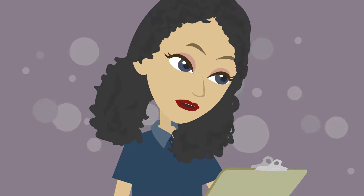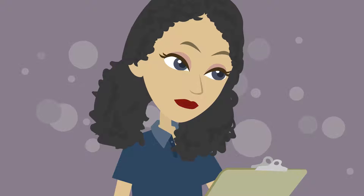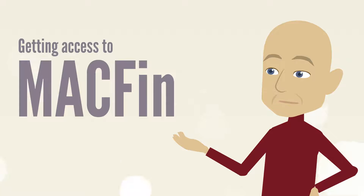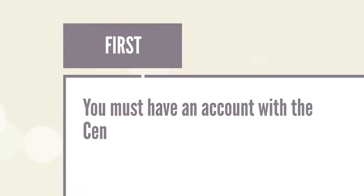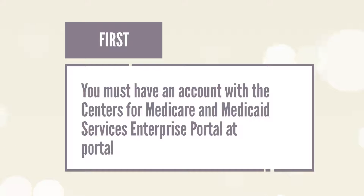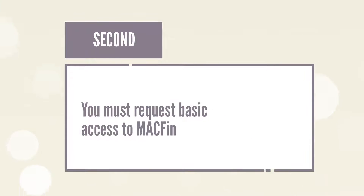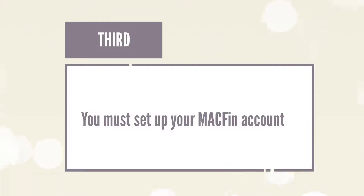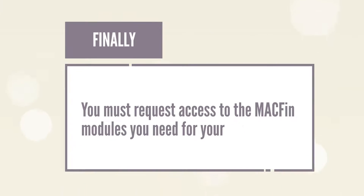How can I access MACFIN to report my state or territory's Medicaid and CHIP financial data? Getting access to MACFIN is a four-part process. First, you must have an account with the Centers for Medicare and Medicaid Services Enterprise portal at portal.cms.gov. Second, you must request basic access to MACFIN. Third, you must set up your MACFIN account. And finally, you must request access to the MACFIN modules you need for your work.